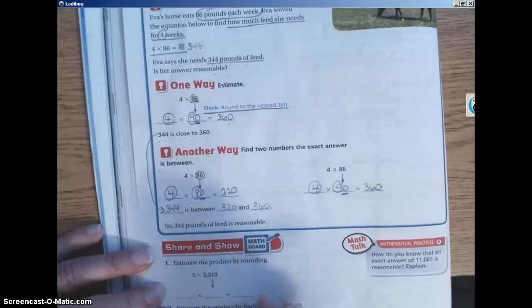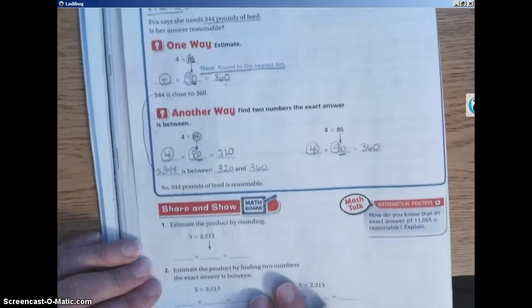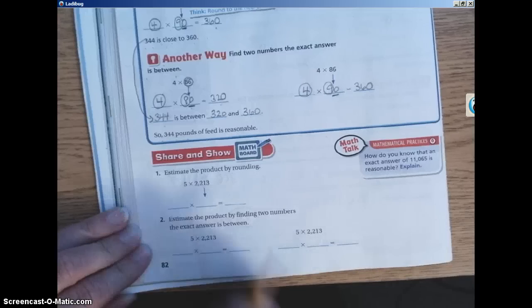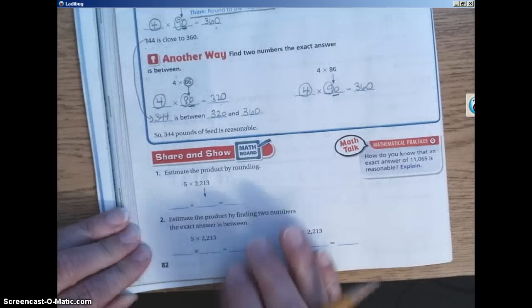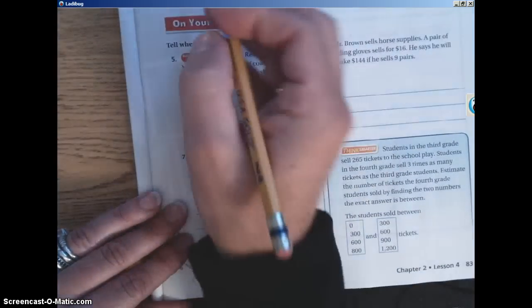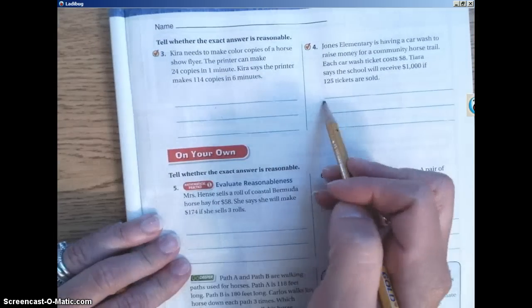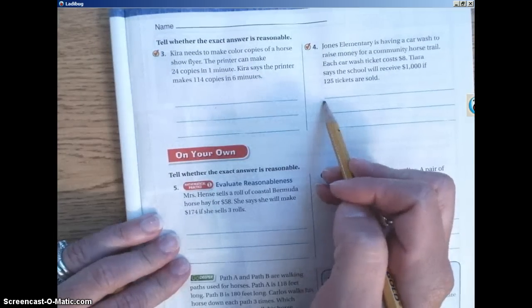Using what we have just shown you on the last two pages, you're going to move down and complete the share and show. So you have number 1 and number 2 are on page 82. And then if you flip over to page 83, you have 3 and 4 to complete. So 1 through 4 for share and show.